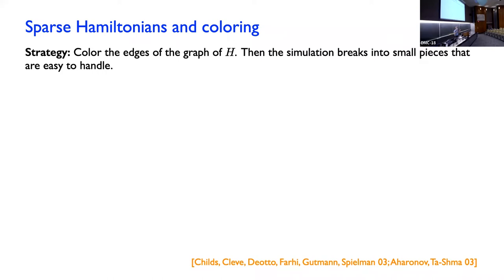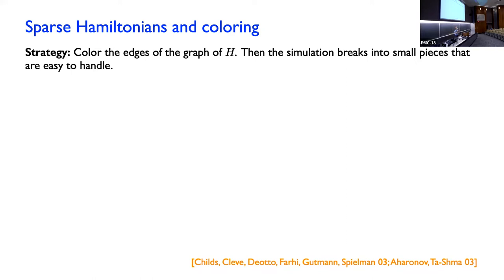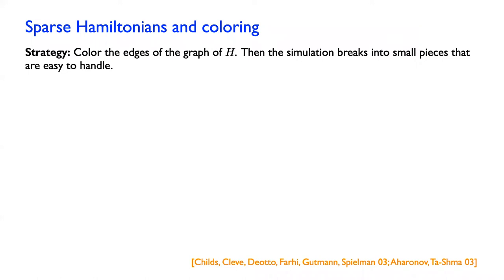What do I mean by the graph of the Hamiltonian? I mean the graph of the non-zero matrix elements of the Hamiltonian. I have a vertex for every computational basis state, and I put an edge between two vertices if there's a non-zero matrix element between them. Because we have a sparse Hamiltonian, this graph is sparse — the degrees of the vertices are not too big. If it's a D-sparse Hamiltonian, then the maximum degree of any vertex is at most D.